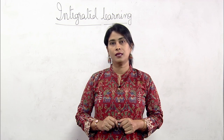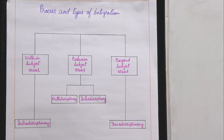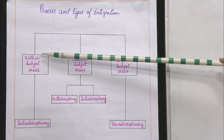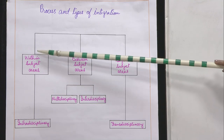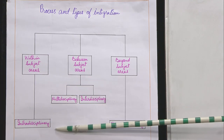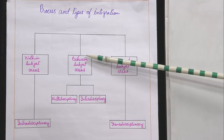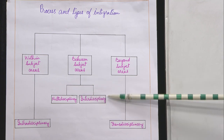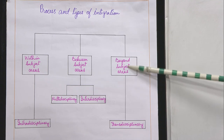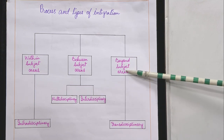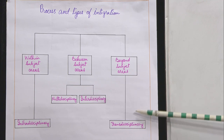Let us now understand the process and types of integration. There are three different types of integration. The first is integration within subject areas, called intradisciplinary integration. The second is integration between subject areas, which includes two types: multidisciplinary and interdisciplinary integration. The third type is integration beyond subject areas, called transdisciplinary integration.